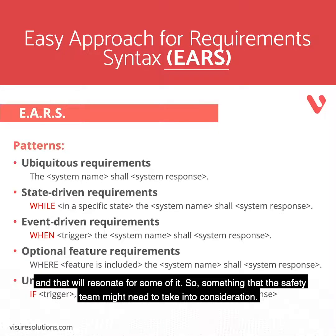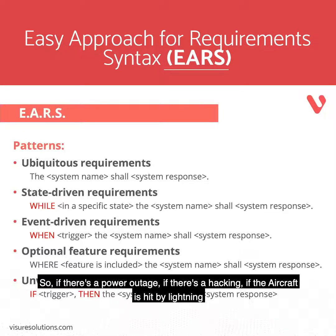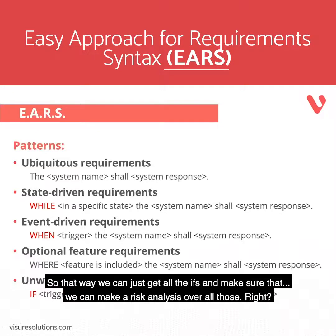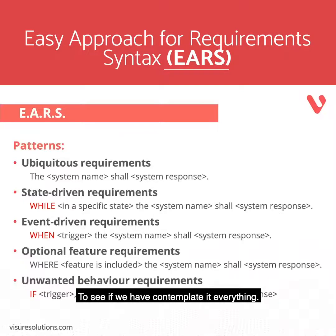That will resonate for some of them — something that the safety team might need to take into consideration. So if there is a power outage, if there's a hacking, if the aircraft is hit by lightning. Everything that should not be the desired outcome of the system, but can happen. That way we can just get all the 'ifs' and make sure we could even do a risk analysis over all those, to see if we have contemplated everything.